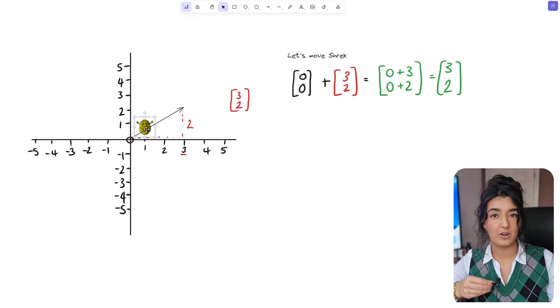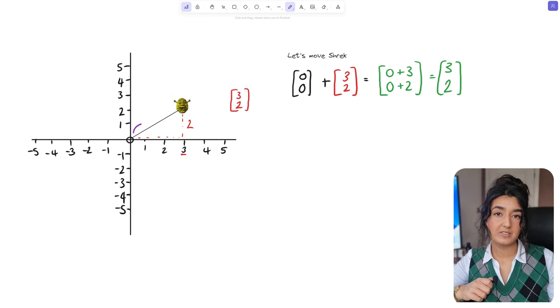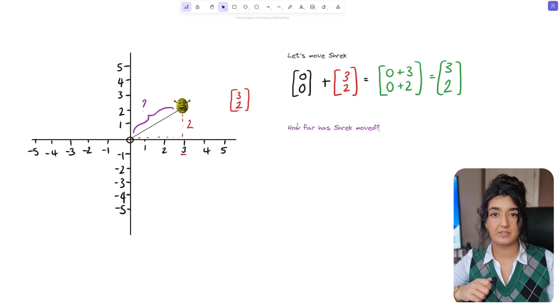But how do we know how far Shrek has moved? Well since this is a right angle triangle and we have the value of these two lengths we could use Pythagoras's theorem to calculate the magnitude.